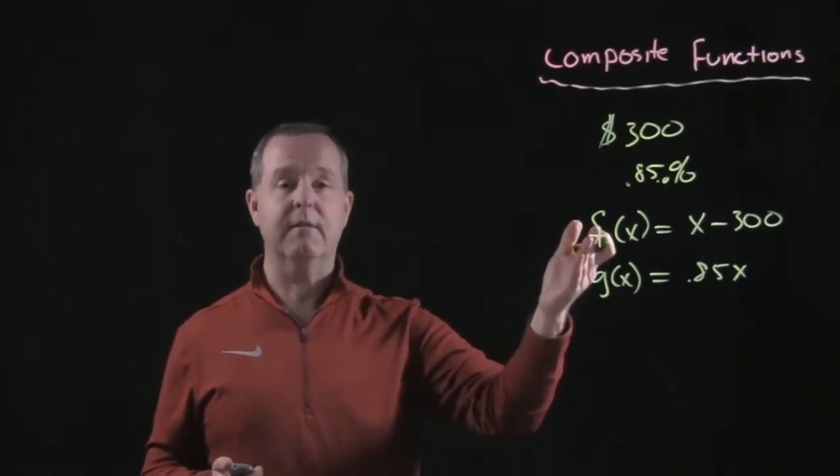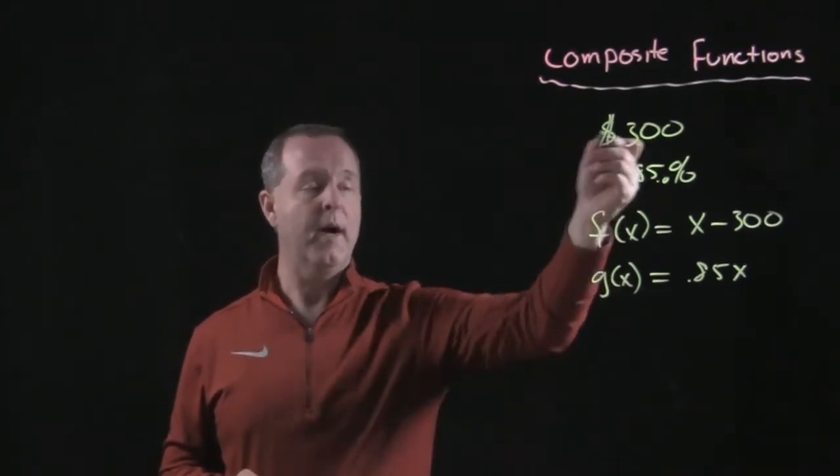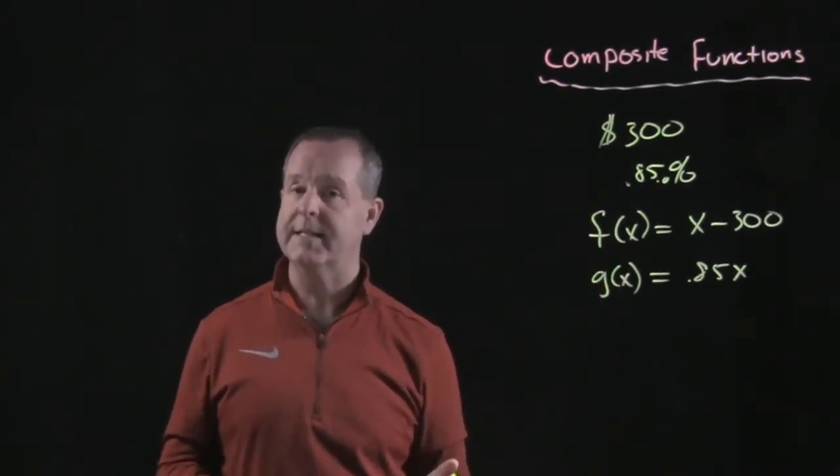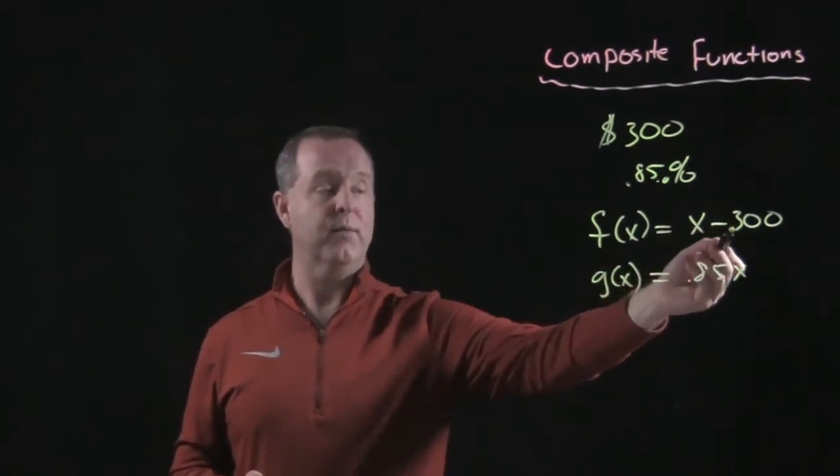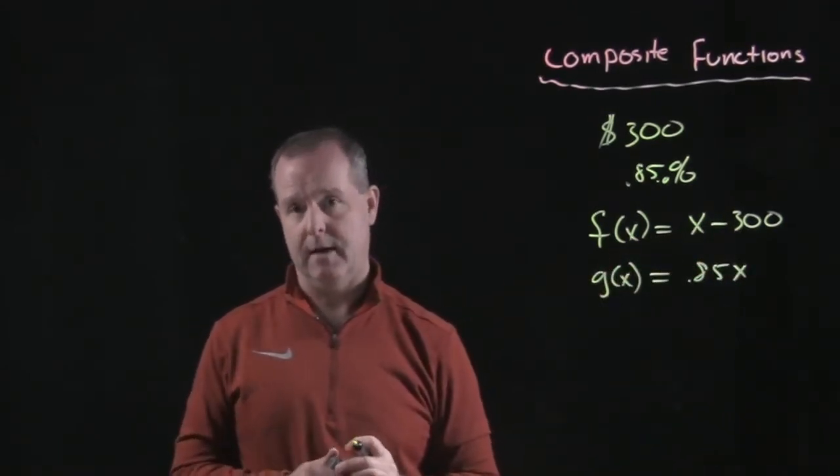So I hope you see how we are able to develop two different functions, one each representing a different discount that we have. One that's $300 off and one that's written as 85% off.